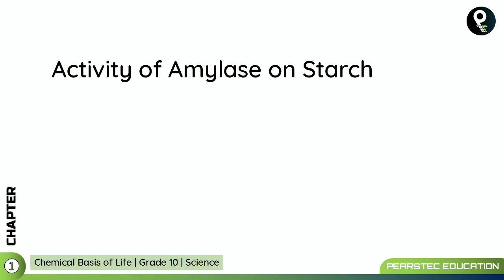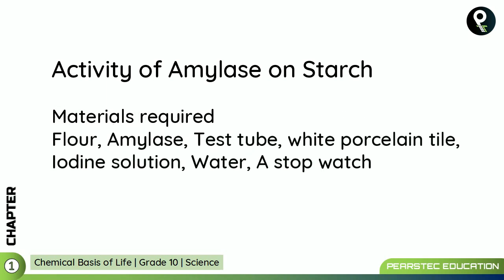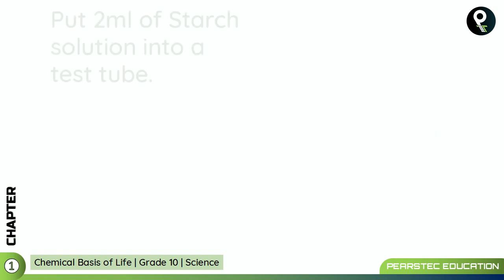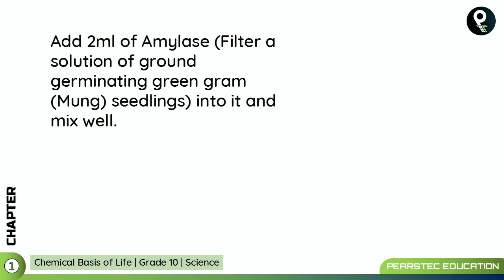For the activity of amylase on starch experiment, we need: floor amylase, a test tube, a white porcelain tile, iodine solution, water, and a stopwatch. Put two milliliters of starch solution into a test tube, then add two milliliters of amylase solution.